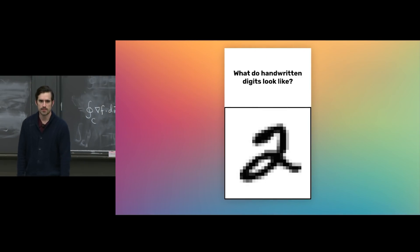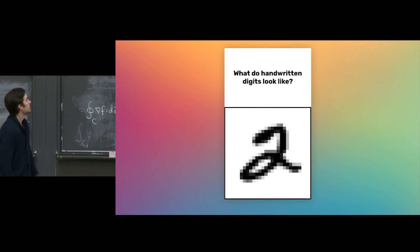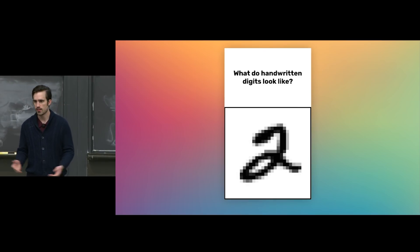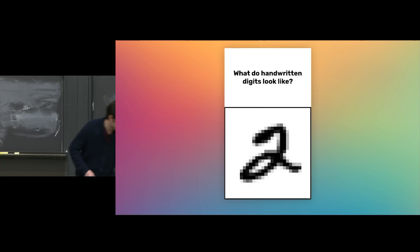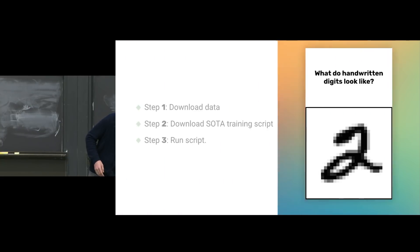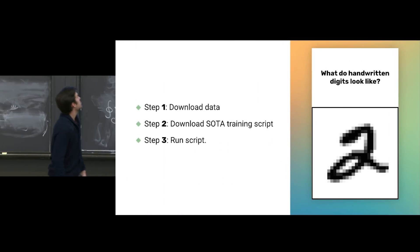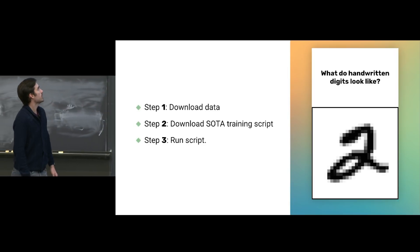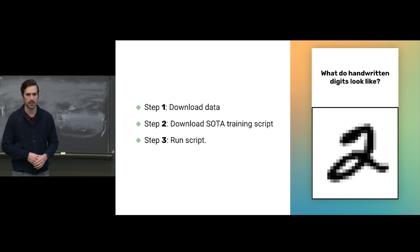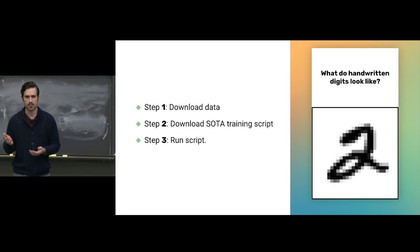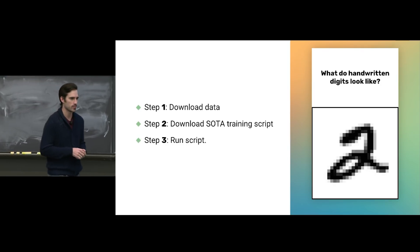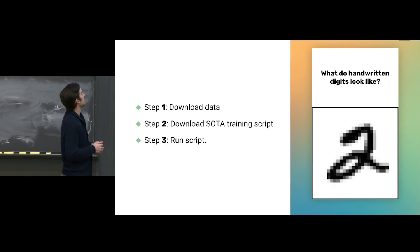But what if we wanted to answer a different question? What if we wanted to answer: what do handwritten digits look like? Well, this would be a totally different story. We download a dataset, we download a state-of-the-art training script from GitHub, we run it, and a few minutes later we'd have the ability to classify handwritten digits with potentially superhuman ability.